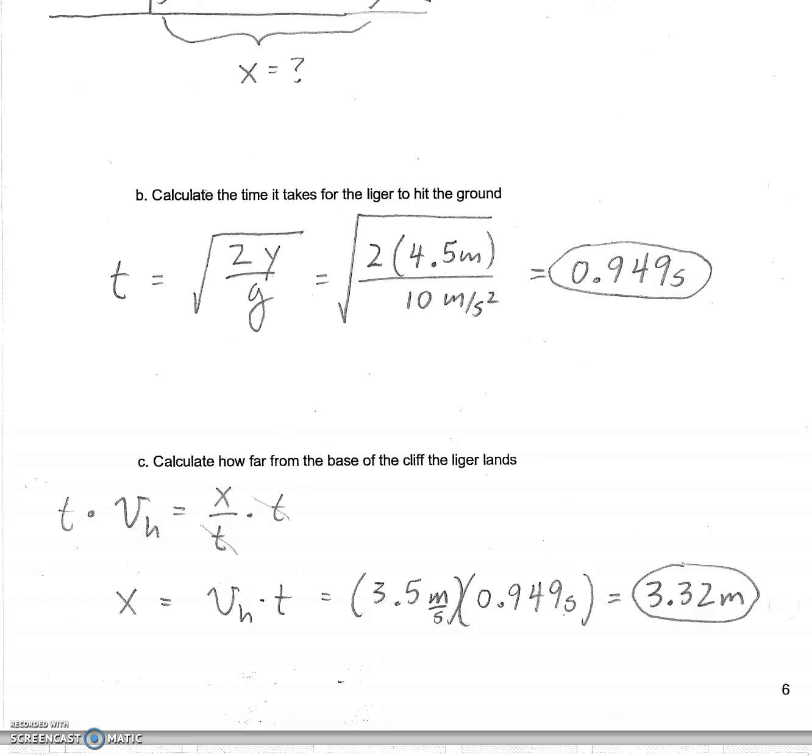And then we can calculate how far away from the base it's going to hit by taking our horizontal velocity and multiplying it by our time. So it gave us the horizontal velocity as being 3.5 meters per second. We calculated the time to be 0.949 seconds. So it's going to hit the ground 3.32 meters away from the base.